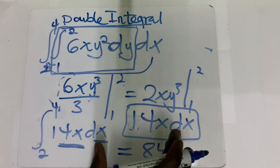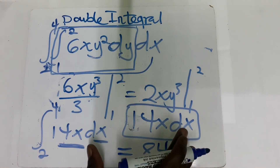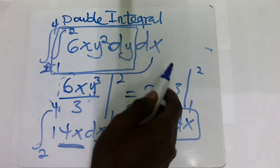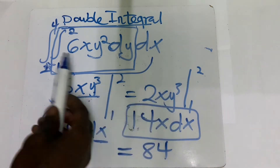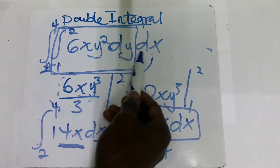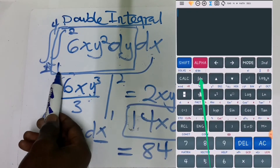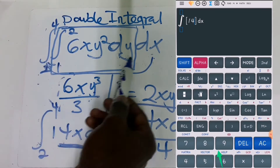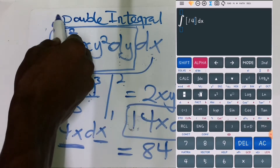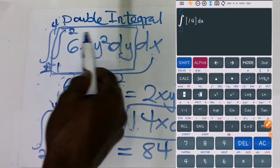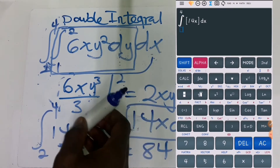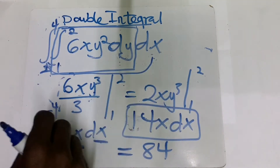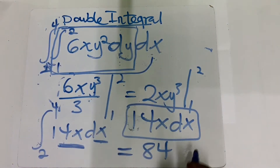When you do that correctly, you get 84. That's the easiest way to do the double integral. You must first identify the dx and dy. You can interchange the order — when you bring 2 and 1 to the inside, x comes inside, and 4 and 2 become the outer limits for y. You take it one by one, integrate, and get the value.